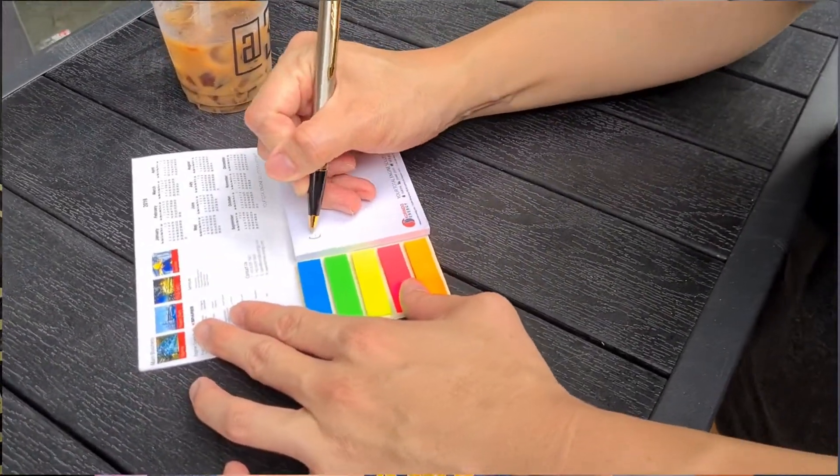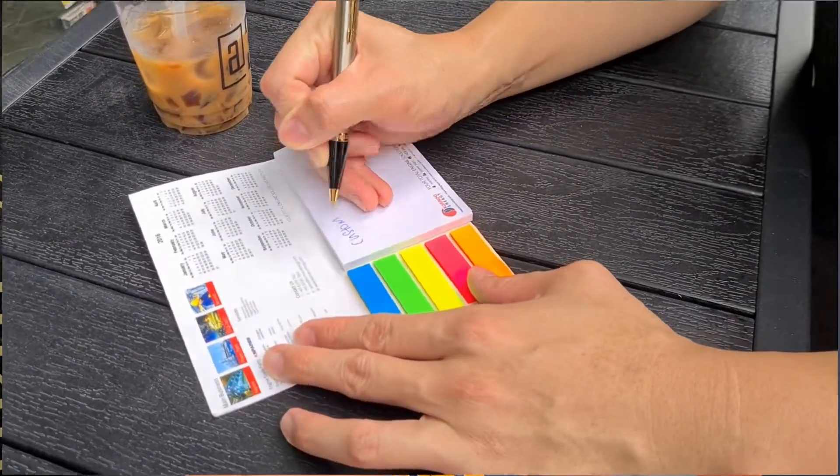When I open it up, you can actually put your calendar or important notes over here. Now on the left side are the neon strips.